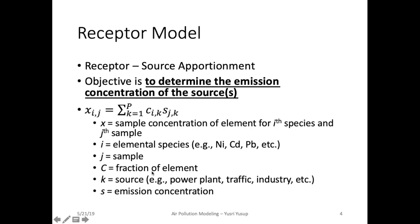The species are usually elemental species such as nickel, cadmium, lead, etc. While the sources are main air pollution sources such as power plant, traffic, and industry, and others.